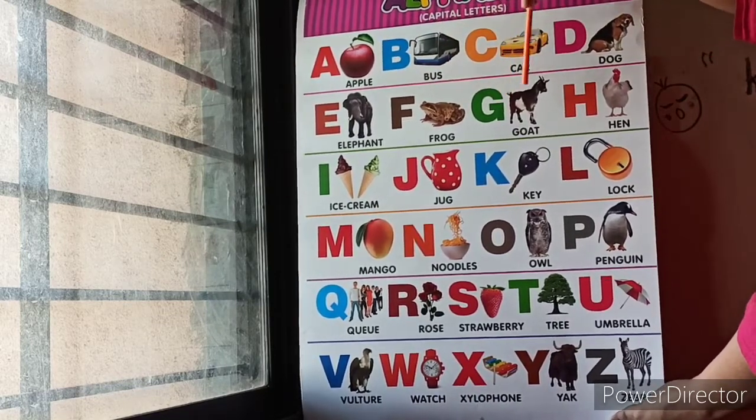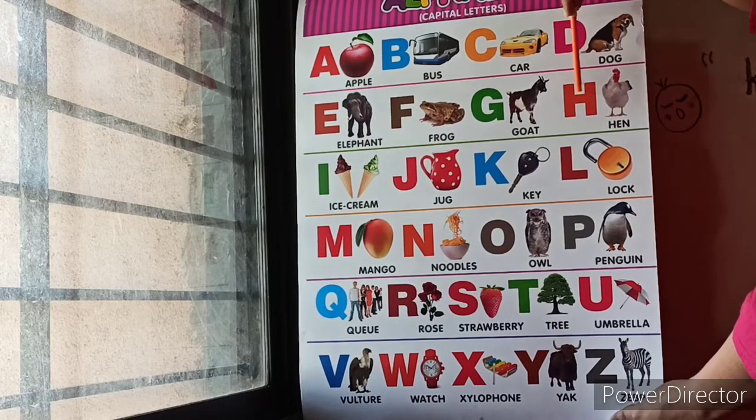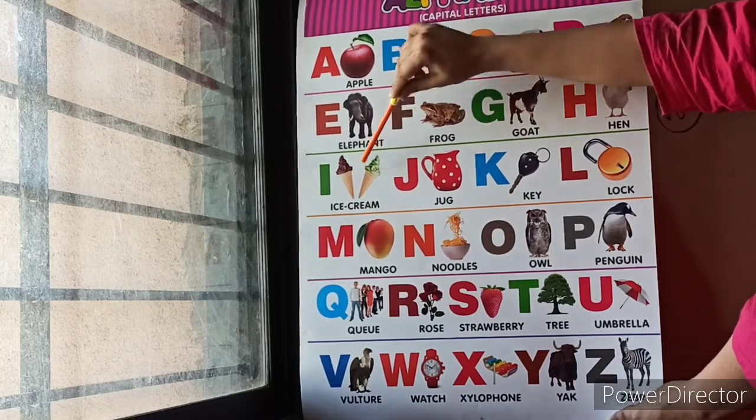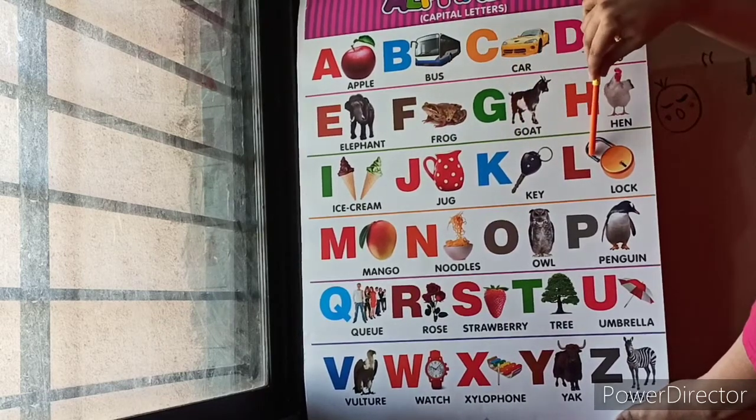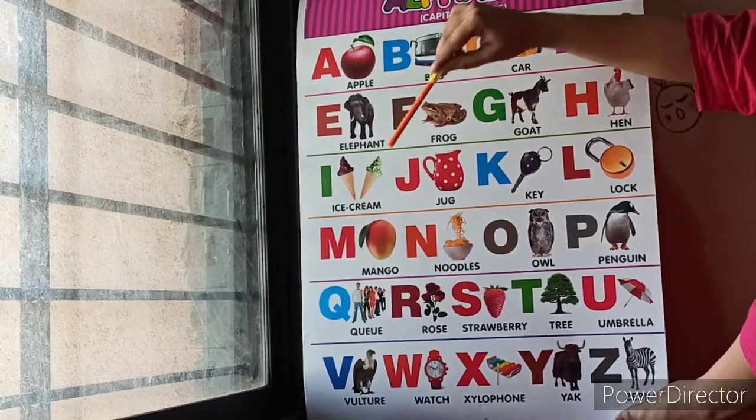G for Goat, H for Hen, I for Ice Cream, J for Jug, K for Key, L for Lock, M for Mango.